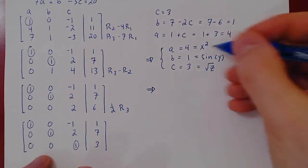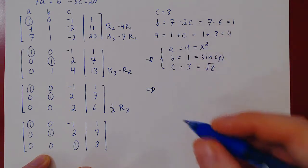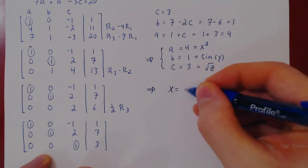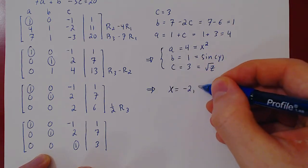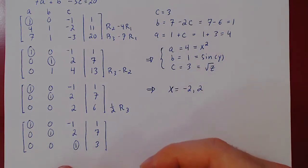Well, if x squared equals 4, then there are two possible values for x. x is either negative 2 or positive 2. And that's it for x.